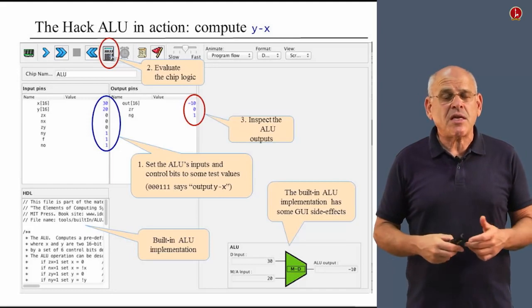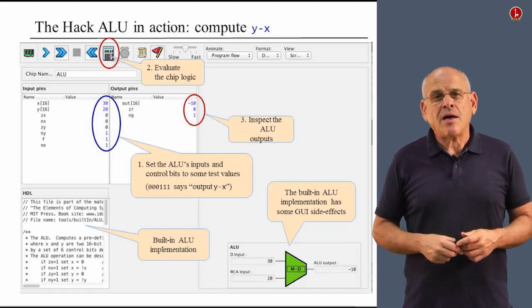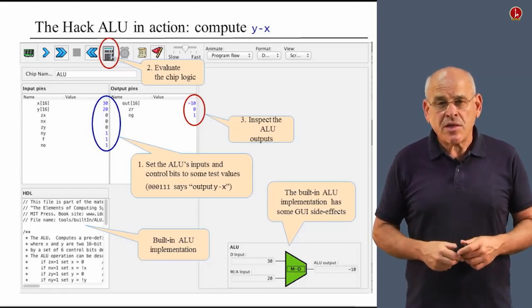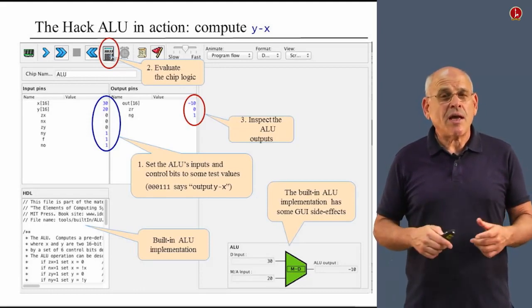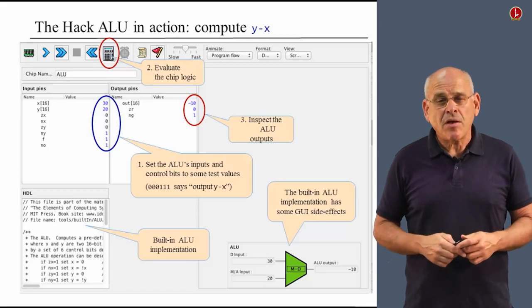And this tells the ALU to evaluate the chip logic on the given inputs. And then we can inspect the outputs. And if we do that, indeed we see that the ALU came out with what was advertised, which is minus 10, the result of y minus x. So it looks like the ALU, at least in this example, works well.